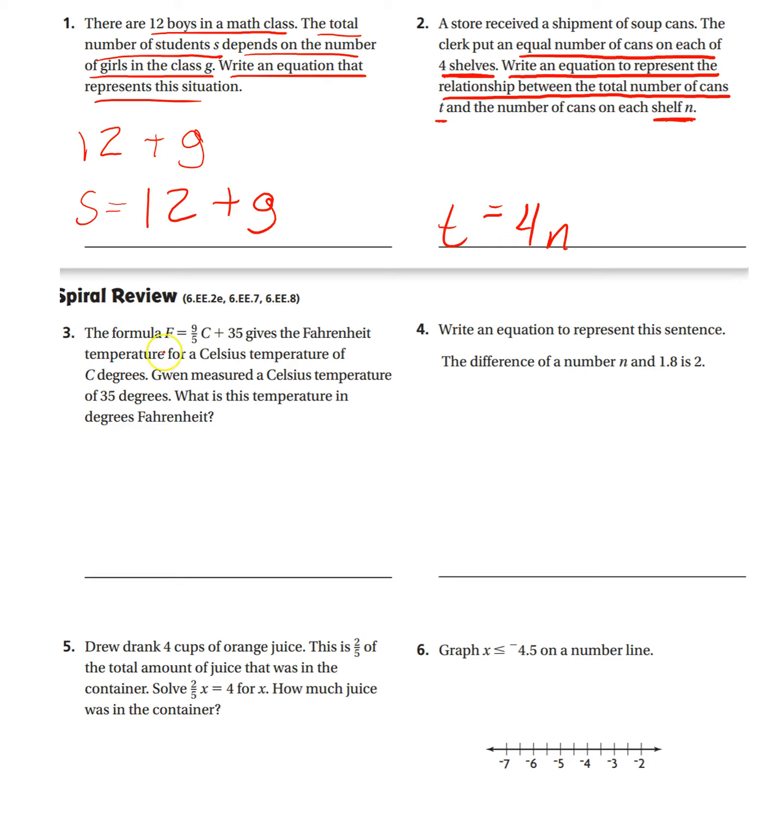All right, number three, the formula F equals nine-fifths C plus 35 gives the Fahrenheit temperature for a Celsius temperature of C degrees. Gwynne measured a Celsius temperature of 35 degrees. What is the temperature in degrees Fahrenheit? Sounds like a very complicated problem, but all we're doing is plugging in. So F equals nine-fifths times, and they told us what C is, 35 plus 35.